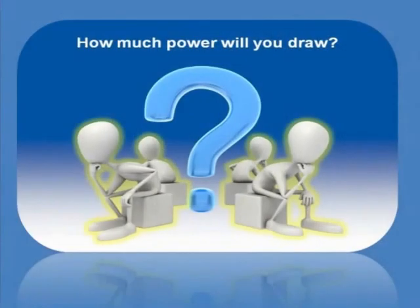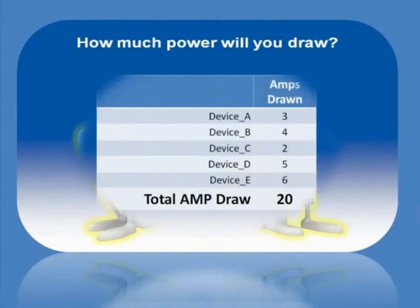The answer to the question of how much power will your current servers and storage devices draw is to add up the amp draw on all equipment that will be plugged into the PDU. You then have the total amp draw for that PDU. The amp draw information can be gathered several ways.